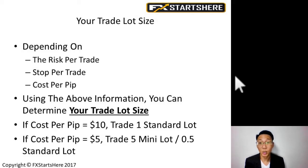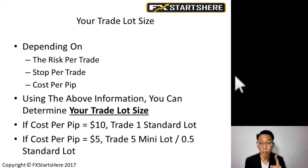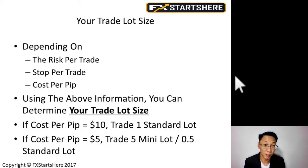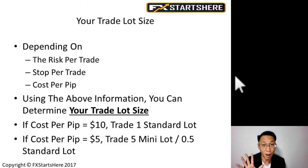Using that information, you can determine your lot size. If your cost per pip works out to $10, then you're going to trade one standard lot. If your pip cost is $5, then you trade five mini lots. These calculations are based on a $10,000 account. If your account is $50,000, then 1% risk is $500 per trade. If you're trading with a $5,000 account, then 1% is $50 — that's your maximum loss per trade.